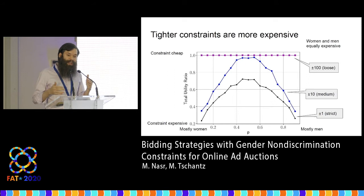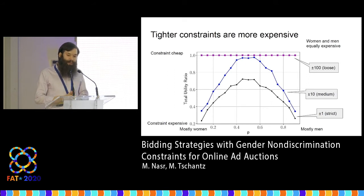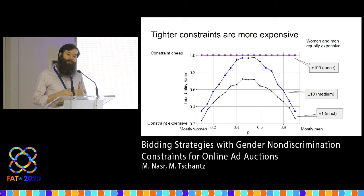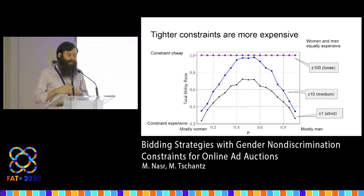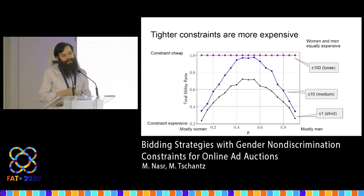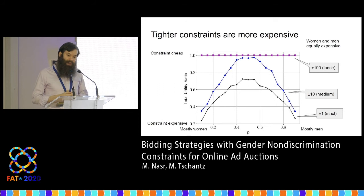That top line is such a loose constraint it doesn't actually change the advertiser's utility, so it's a flat line at a ratio of one. The middle line is parity plus or minus 10 — if men and women are about equally common, the advertiser only gets a small hit in utility. The bottom line is plus or minus one, where even if the ratio is approximately equal, they lose about a quarter of their utility.